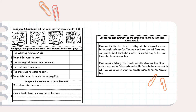Next exercise: you have to read again and put the pictures in the correct order. You have to put numbers in the boxes. Okay, there are 4 pictures — A, B, C and D. You have to put the number according to the correct sequence.